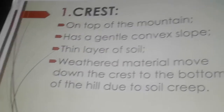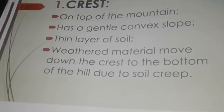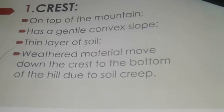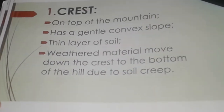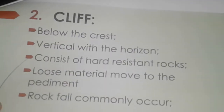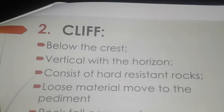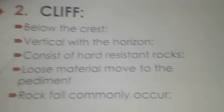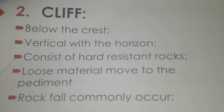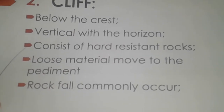The crest is on top of the mountain — it is gentle and convex and usually has a thin layer of soil, because material moves down from the crest to the bottom of the hill. Just below the crest is the cliff, which is vertical and consists of resistant rocks. Loose material such as rubble can move along the cliff face.